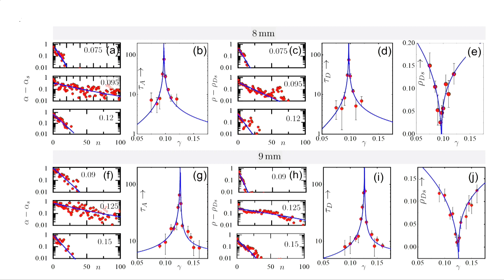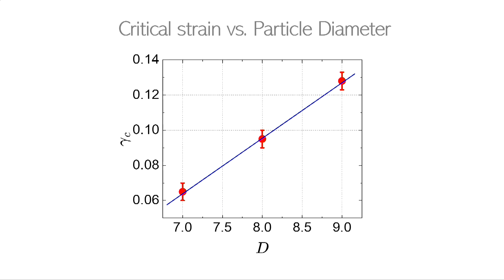If you change the system size - going from 7 to 8 to 9 particle widths for example - the critical gamma-c shifts. The defect fraction goes to zero at different gamma-c values. Measuring gamma-c as a function of system size d shows that the critical strain has a linear relationship with d. Very tiny particles don't remain two-dimensional as they tend to buckle out of plane.